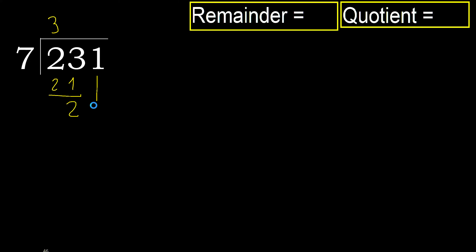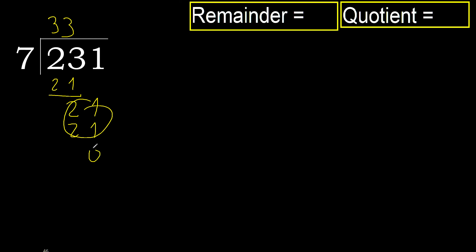Next, bring down to get 21. 7 multiplied by 3 is 21, which is not greater. Subtract: remainder is 0.